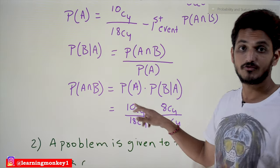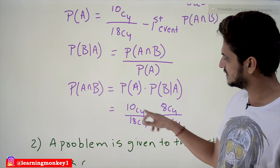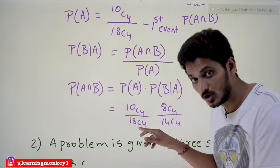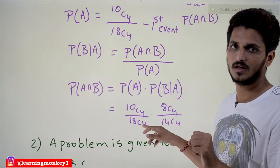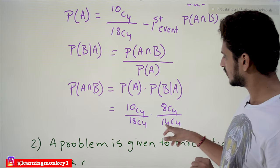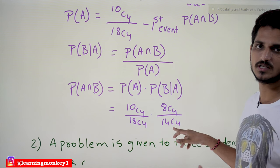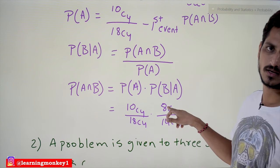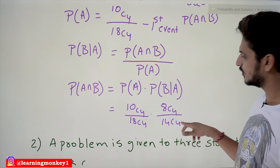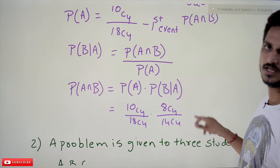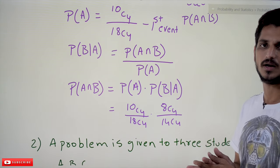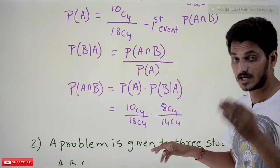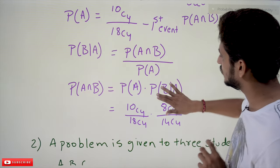Probability of A intersection B equals probability of A multiplied by probability of B given A. Probability of A is 10C4 out of 18C4. After selecting four gold coins, 14 coins remain (18 minus 4), and out of those 14, 8 are silver coins. So probability of B given A is 8C4 by 14C4. This gives us the probability of both events happening.